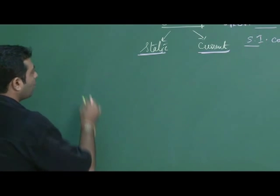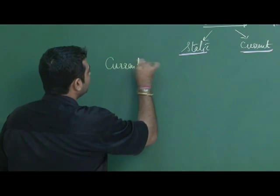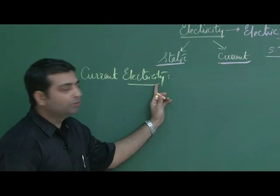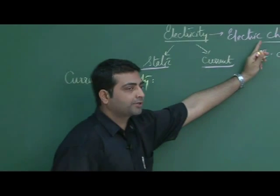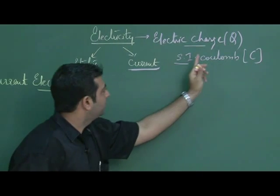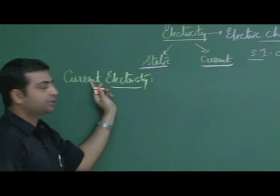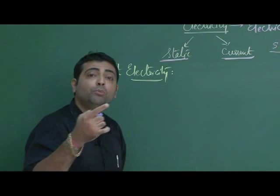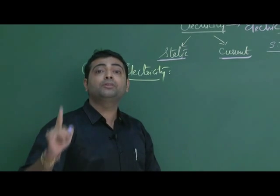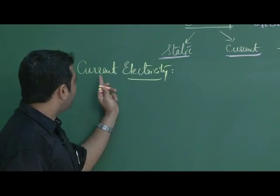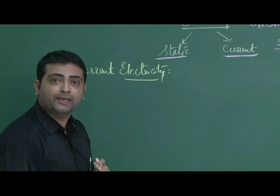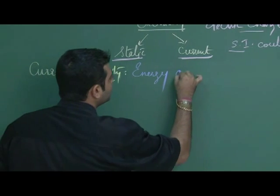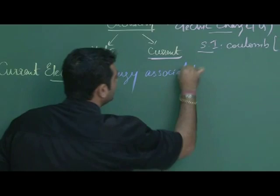If I want to explain what the term current electricity means — electricity is electric charge, capital Q, SI unit Coulomb. The word current stands for motion of electric charge. Any object when set into motion has some energy associated with it. Likewise, current electricity is the energy associated with a moving charge.